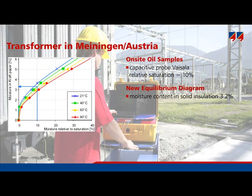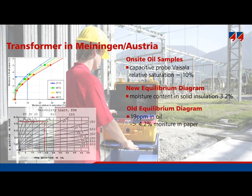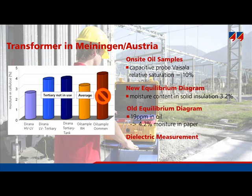The old equilibrium diagram from Oomen was also applied. Here, the reading of 19 ppm moisture content in the oil at 30°C indicated a moisture content of 4.2%, which is much higher than that obtained with the new equilibrium approach. The dielectric response was measured in both the frequency domain and the time domain. This diagram compares the moisture content derived from the two different methods. The result obtained from the Dirana for the insulation between the high voltage and the low voltage winding was 2.6%.